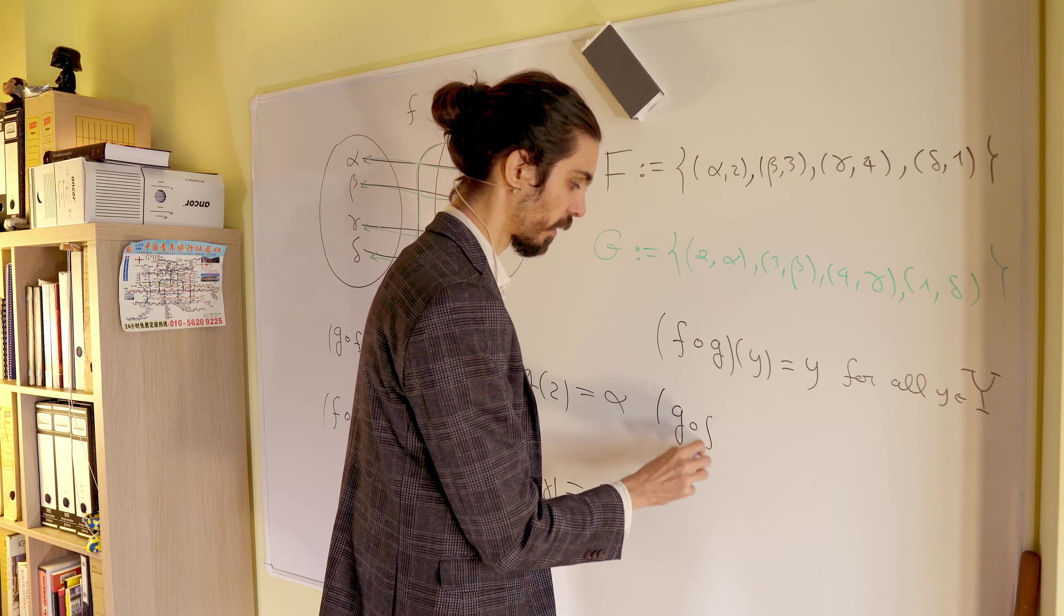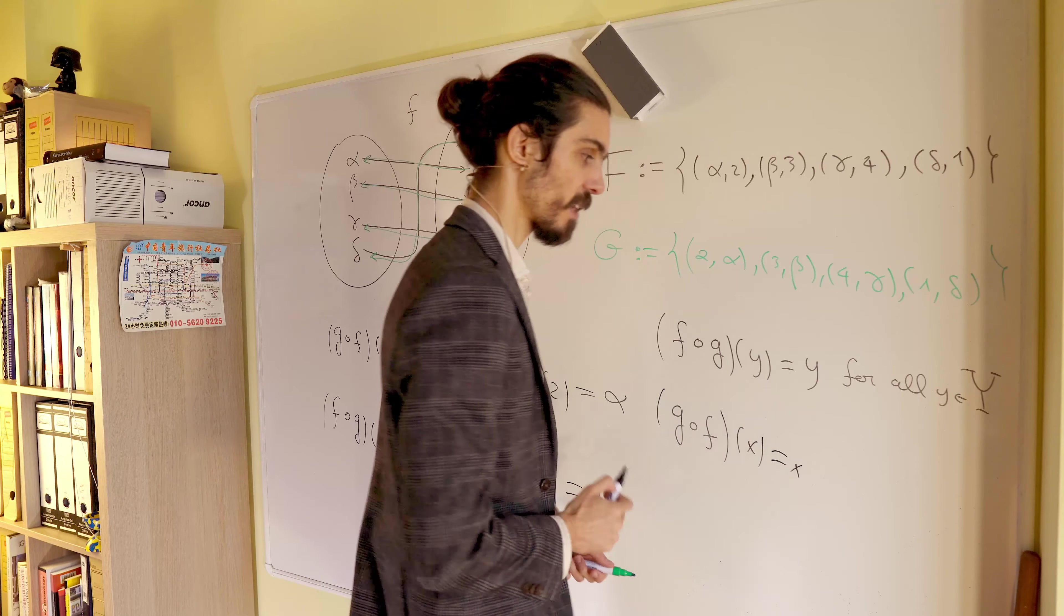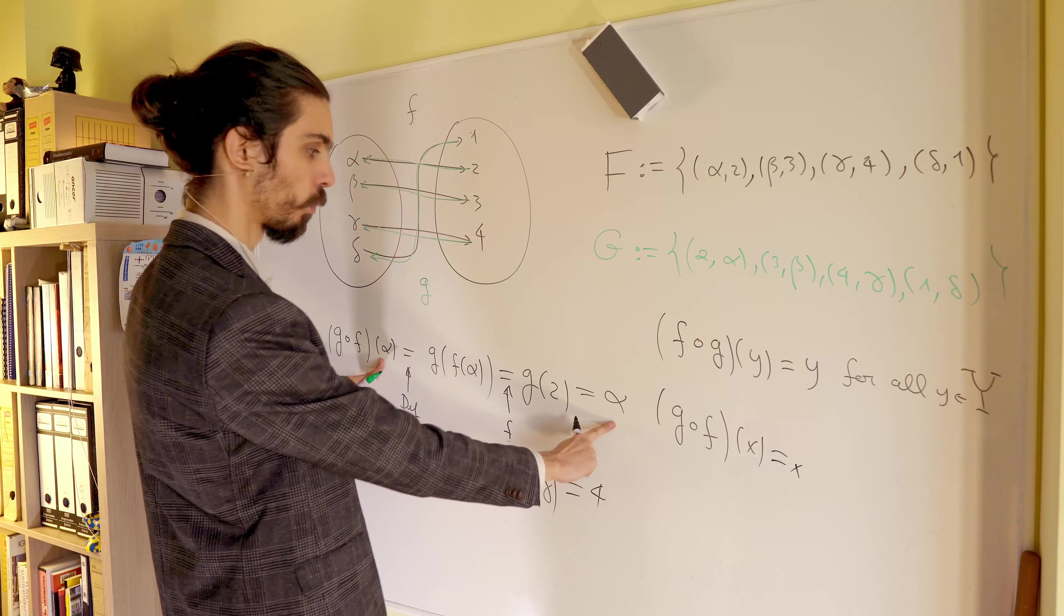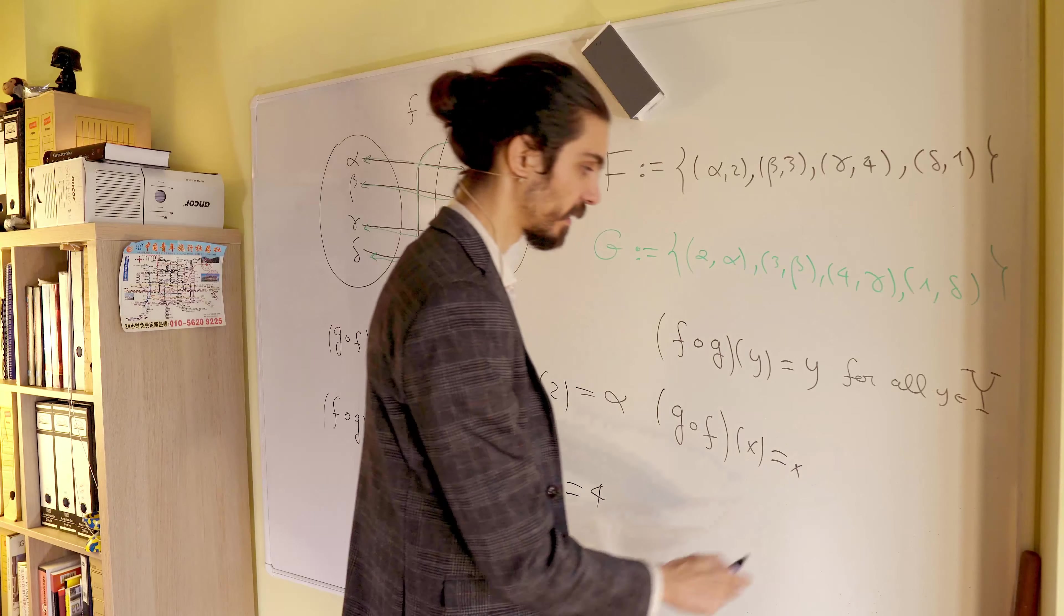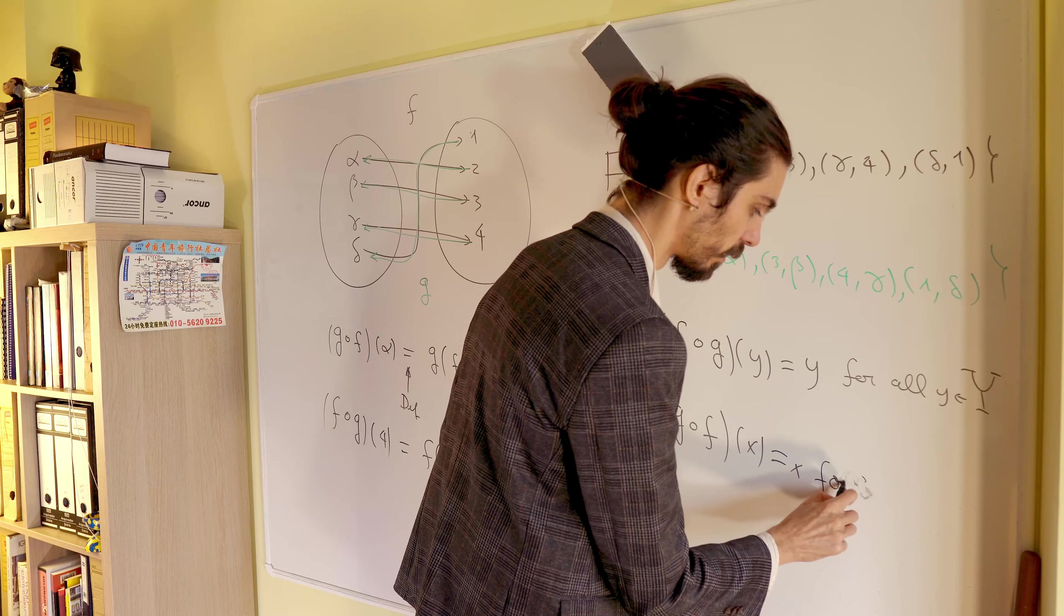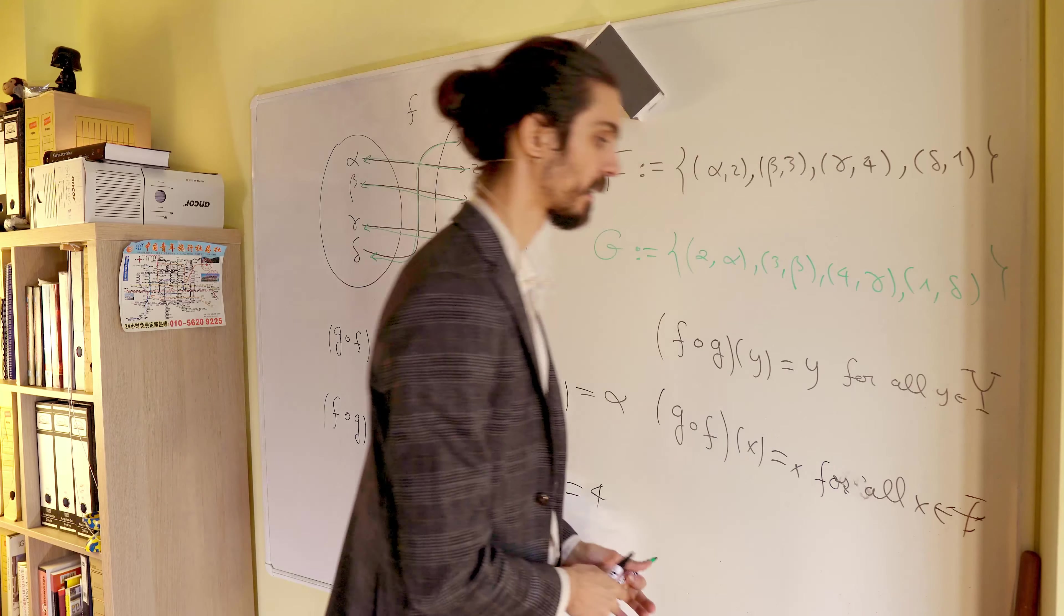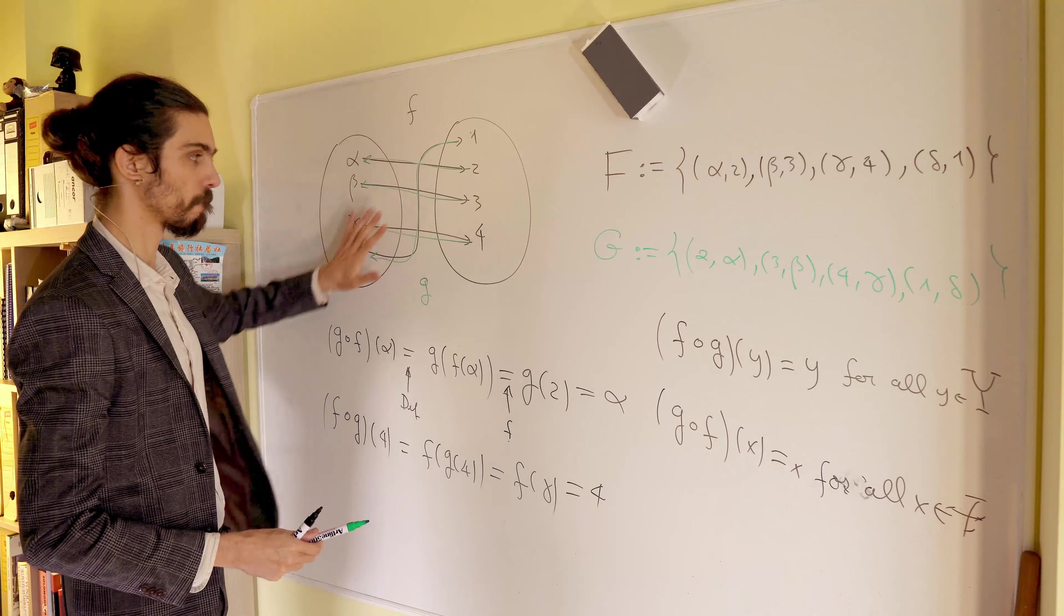And for this thing, f of g of f of any value x, well, it returns x again. So alpha was returned, again, as alpha under this action. So this thing is true for all x belonging to the set big X. And big X is this thing here. Okay?